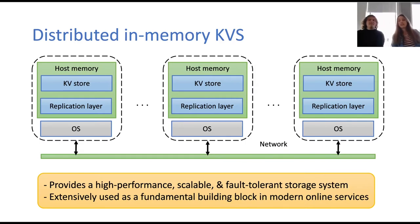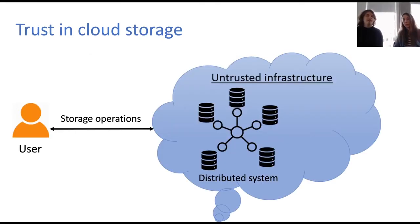Key-value stores are a fundamental building block for storing data, and that makes them popular. They are everywhere in modern online services. They offer high performance — that means low latency and high throughput — and you can scale them out so that you can go over the limits of one node. The cloud is ideal for it because you can very easily scale your application depending on your current workload by adding or removing nodes.